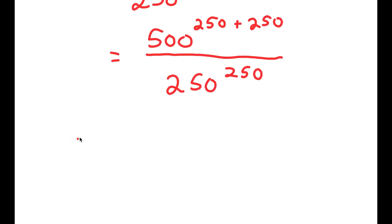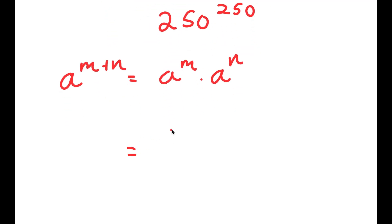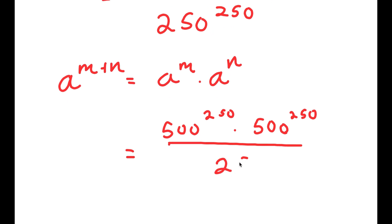Now, if I have something in the form a to the power of m plus n, this is equal to a to the power of m times a to the power of n. So, 500 to the power of 250 plus 250 is going to equal 500 to the power of 250 times 500 to the power of 250. And I have all of this over 250 to the power of 250.